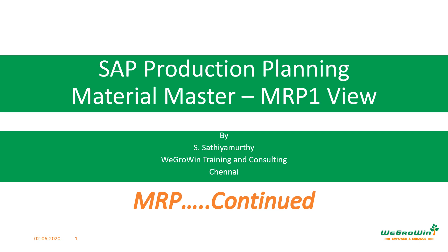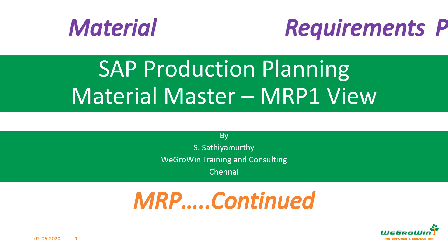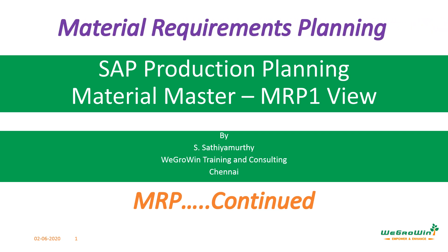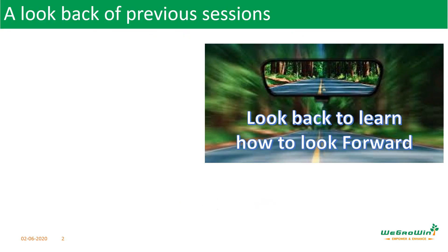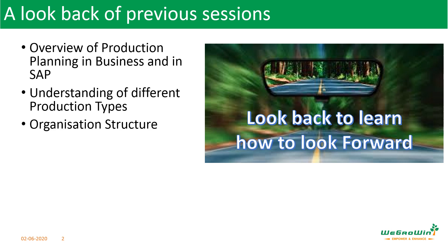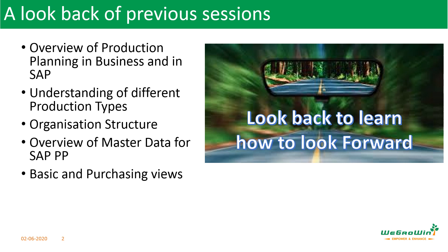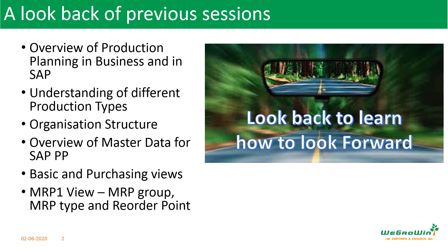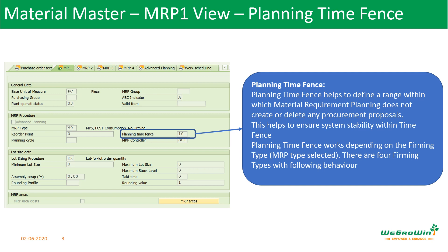Welcome back to our course on SAP production planning. We are discussing material requirements planning and will continue the topic in this session. So far, we discussed an overview of production planning in business and in SAP, different production types, organizational structure, an overview of mass editor required to set up SAP PP, various parameters in the basic and purchasing views, MRP1 view, MRP group, MRP type, and reorder point — including how to calculate reorder point automatically.